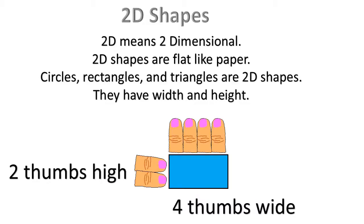2D shapes. 2D means two-dimensional. 2D shapes are flat like paper. Circles, rectangles, and triangles are 2D shapes. They have width and height. This rectangle is 2 thumbs high and 4 thumbs wide.